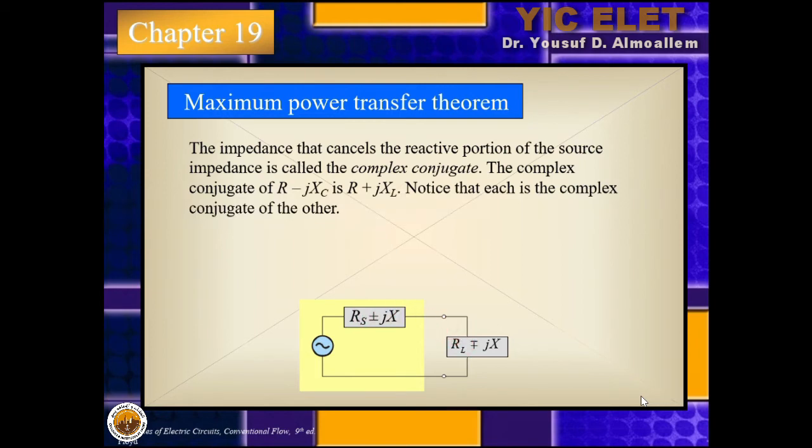In this scenario, what we call it is a complex conjugate. If we have two numbers and the imaginary parts are in opposite sign, then we can call this as a complex conjugate. As we can see here, R minus jXC is a conjugate of R plus jXL if XC is equal to XL.